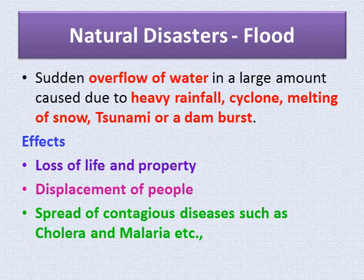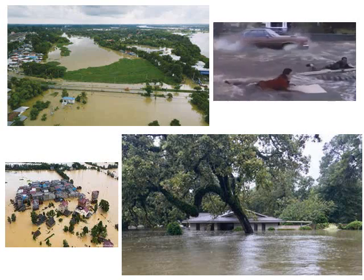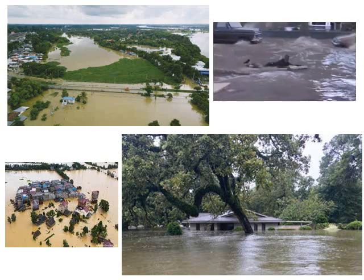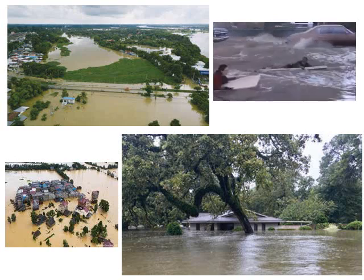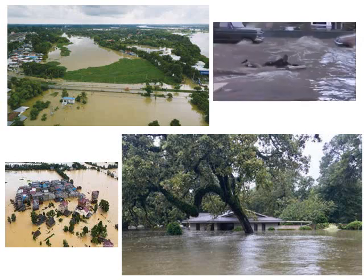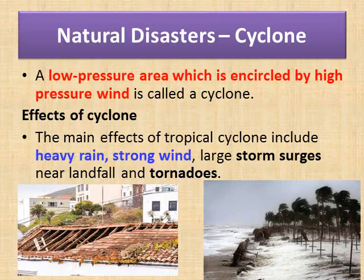In the picture you can see the various effects of a flood — water covering residential areas, drenching everything, with people clinging to floating objects to save their lives. Now let us learn about cyclone. A cyclone is a low-pressure area which is encircled by high-pressure wind.